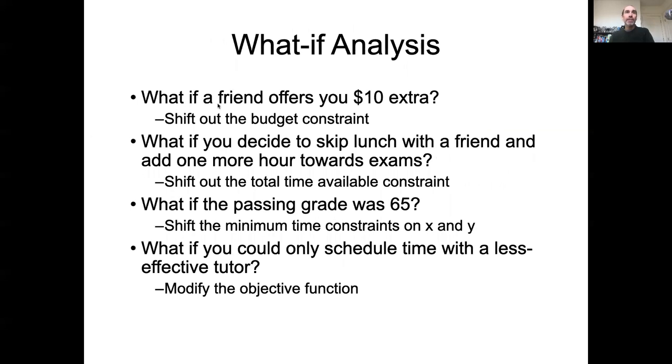So how would you implement those sorts of scenarios? So for example, if you had an extra $10, you would shift out your budget constraint. So that one line that said 15x plus 5y equals 100, it's like 15 over 3x plus 5y is less than equal to 100, now becomes less than equal to 110 to change one of the constraints. Similarly, if you skipped lunch and had more time for studying, you would shift not the amount that you could study for any one class, but the total number of hours would go up from 11 to 12.